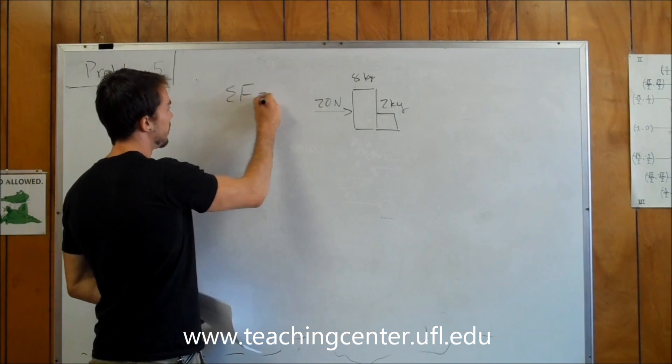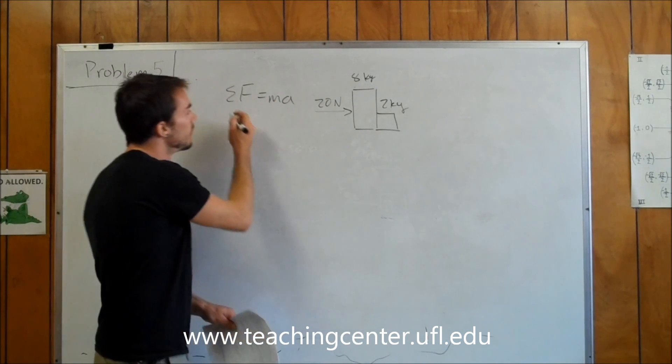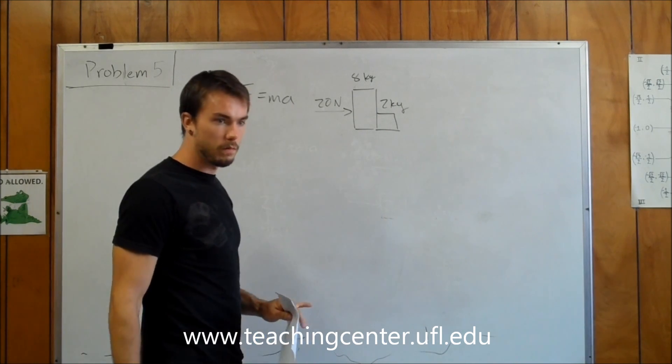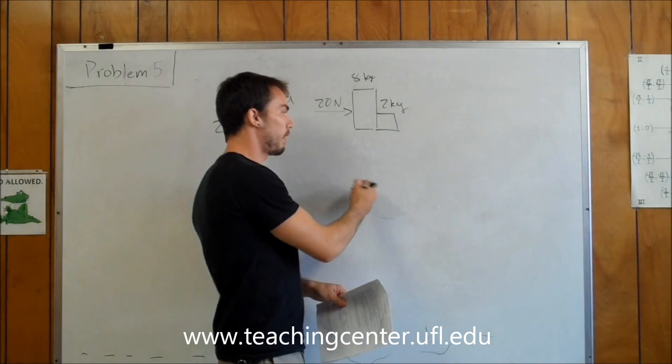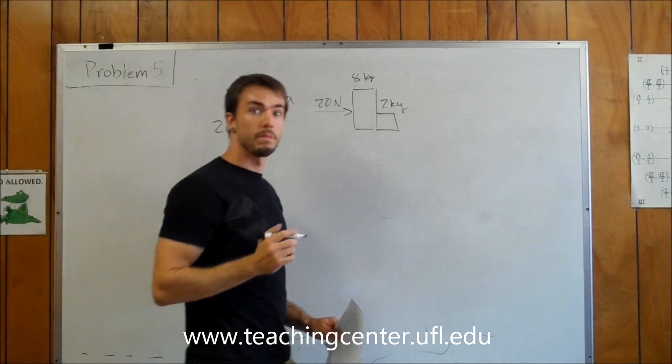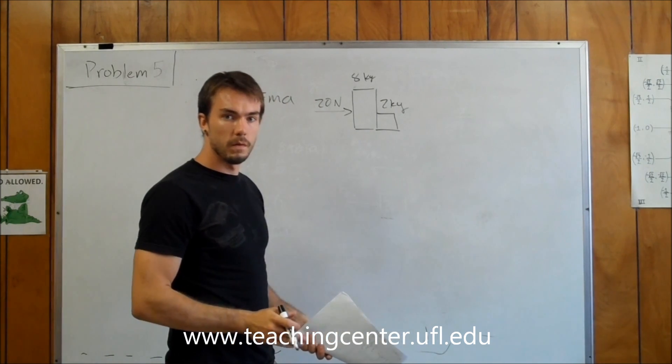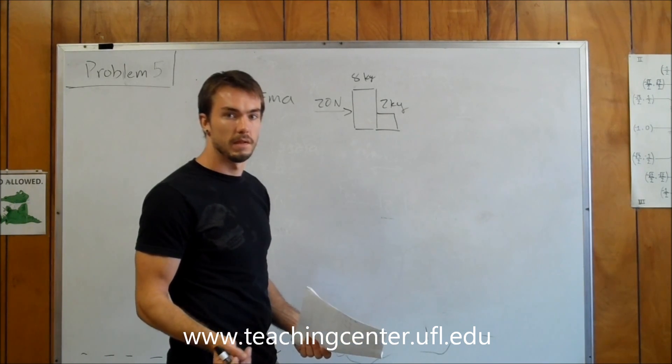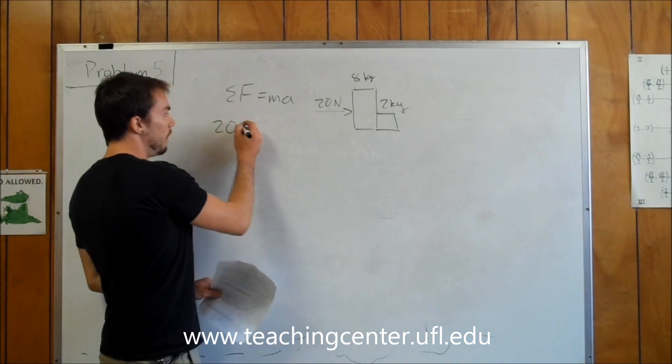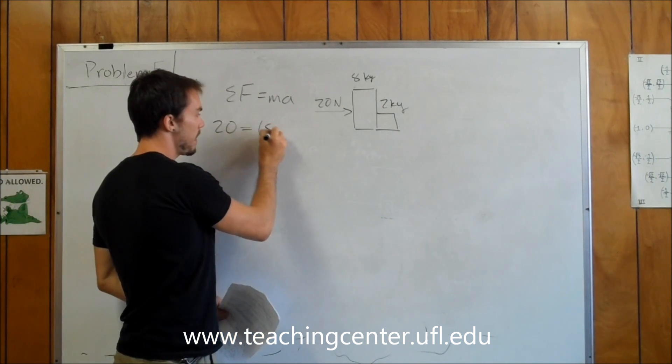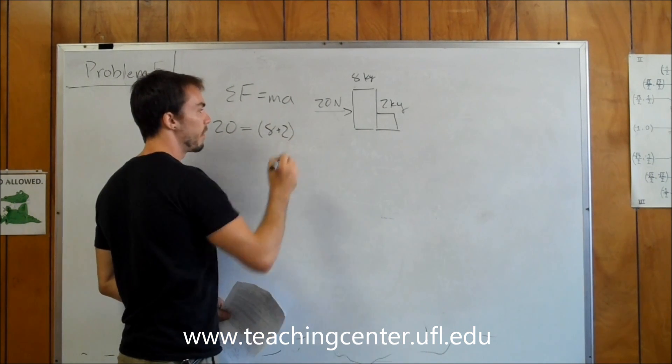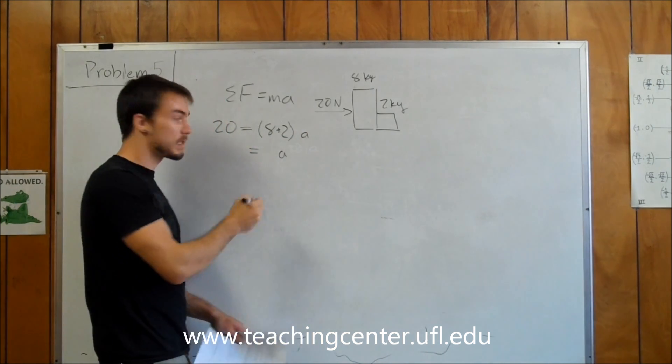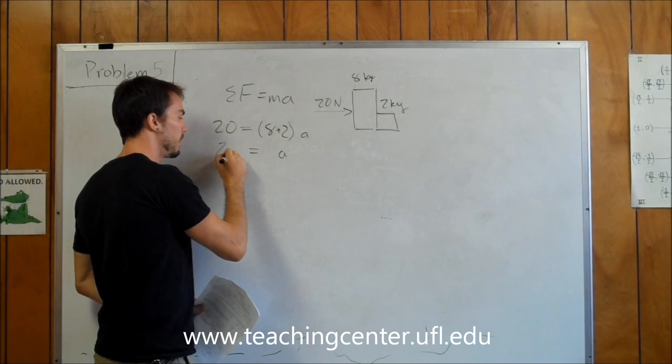Going back to Newton's law, the sum of the forces must be equal to our mass times acceleration. We can say that we only have one force. They tell us there's no friction, there's nothing else going on. We do have our weight pulling down on both of these guys and the normal force pulling up, but those two forces don't come into play in this because there's no friction. They have nothing to do with how fast the system is going to be accelerating. So 20 is equal to 8 plus 2 kilograms, both the masses, times our acceleration. Our acceleration is just going to be 20 over 10, or 2 meters per second squared.